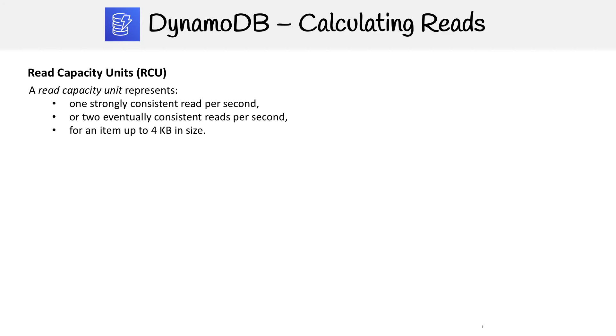So in DynamoDB, it's important for us to know how to calculate the reads or the writes. So let's start with read capacity units. A read capacity unit represents one strongly consistent read per second, or two eventually consistent reads per second for an item up to four kilobytes in size.